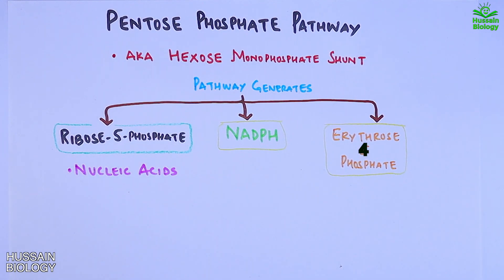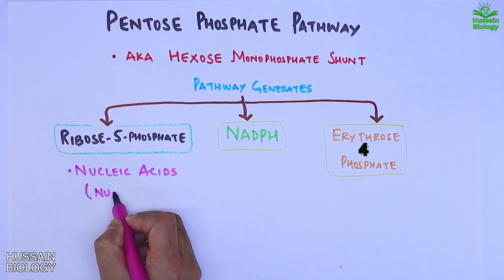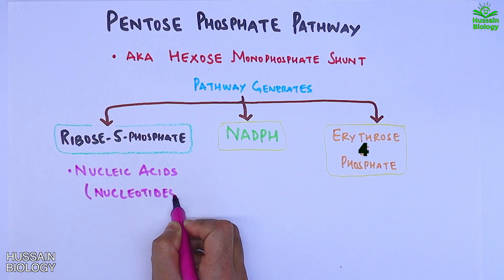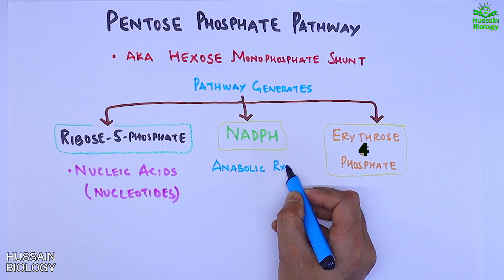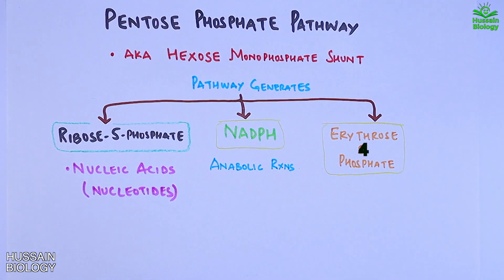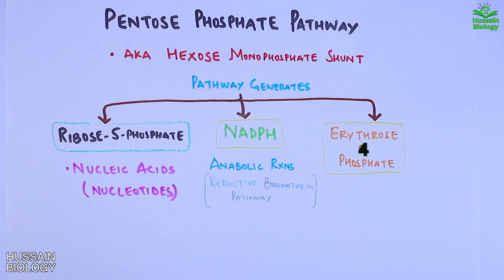From ribose-5-phosphate we get the production of nucleotides, and from these nucleotides we get the nucleic acids. Then we have the NADPH molecule, which drives anabolic reactions in reductive biosynthesis pathways.